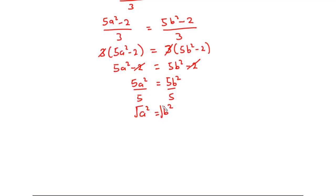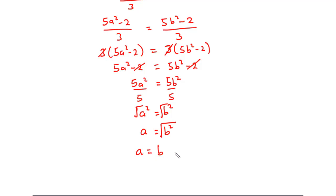Taking the square root of both sides: a = ±b, meaning a = b or a = −b.